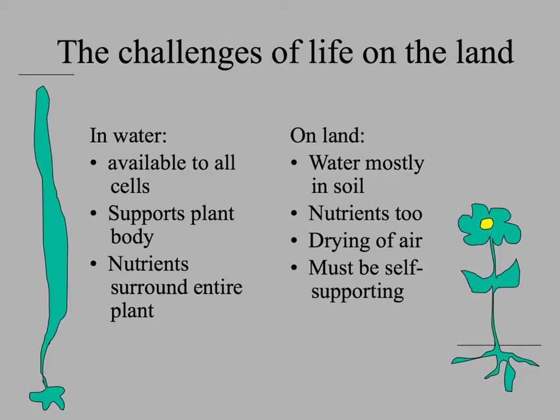On land, however, water is mostly in the soil and has to be picked up by the roots and moved around. Nutrients also are in the soil. Air can be very drying and plants evolved adaptations like cuticle and stomata. But most importantly, terrestrial plants have to have more structural material to support themselves without the buoyancy of the water.